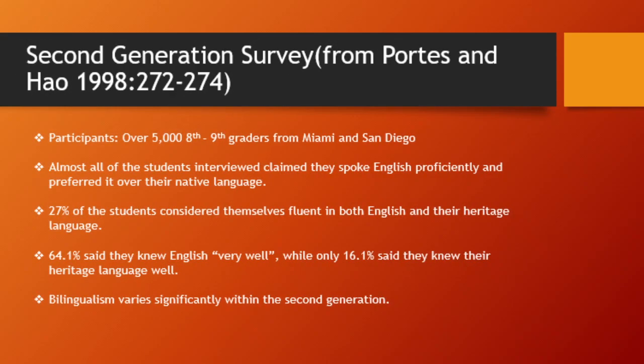A survey done by Portis and Howe asked 5,266 8th and 9th graders from the Miami and San Diego areas how proficient their English was. The data showed that almost all of the second generation students interviewed had a proficient knowledge of English and preferred it over their heritage language. 27% of the students considered themselves fluent in both their heritage language and English. Bilingualism varies significantly in the second generation — 64.1% claimed they knew English very well, while only 16.1% were competent in their heritage language. This reinforces that knowledge of the heritage language often starts to disappear within the second generation.